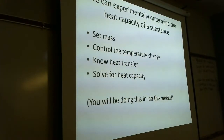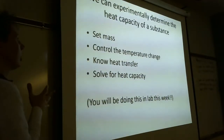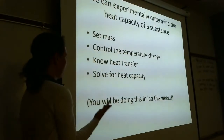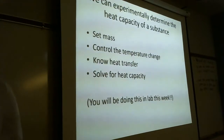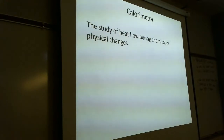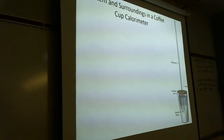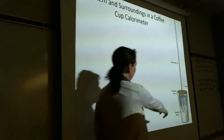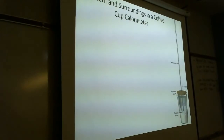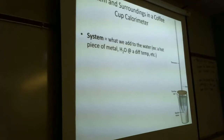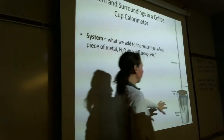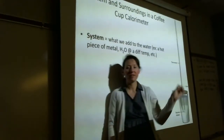We're going to do something in lab this week. You are going to set the parameters for this experiment, where you're going to determine the heat capacity of something experimentally and compare it to the known value. That's what you're doing this week in lab — you're writing that procedure. Calorimetry is the study of heat flow during chemical and physical changes. We're going to be using a coffee cup calorimeter, which is an isolated system. We'll use styrofoam cups with a snug-fitting lid and keep it stirring, with a thermometer measuring inside. The system is whatever we add to the water. Water is part of the setup.